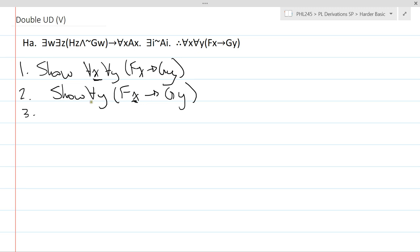So now I look at my show line. It's a universal. So again, I show an instantiation of it, fx arrow gy. You have to leave y. Well, sorry, you don't have to leave y alone. You could change it to something else. But you can't change it to x because x appears unbound in a previous line to 3.